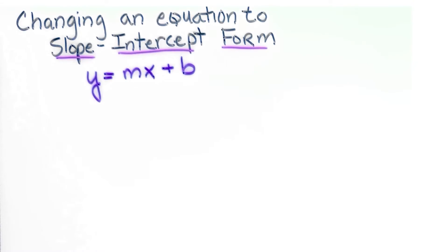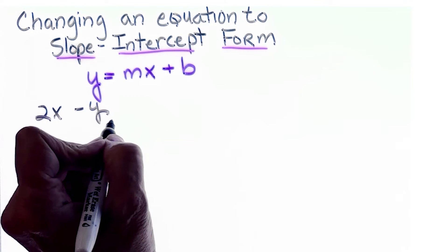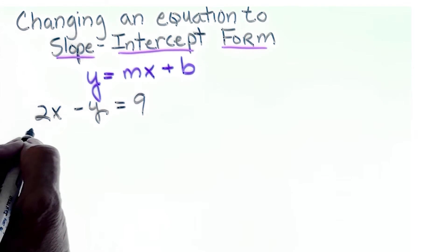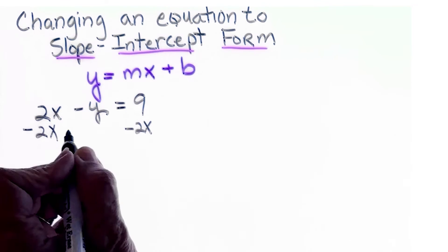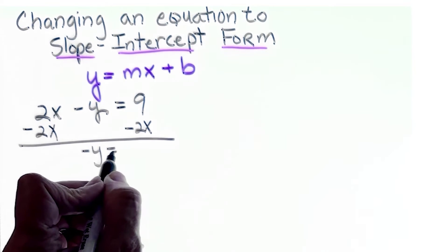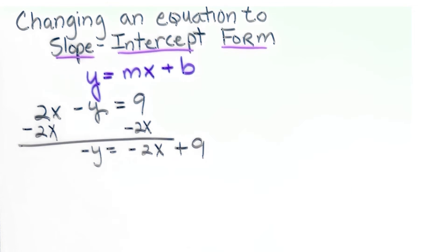This lesson is about changing an equation to slope-intercept form, y equals mx plus b, when given an equation in standard form such as 2x minus y equals 9. I subtract 2x from both sides of the equation, so that minus y becomes negative y equals negative 2x plus 9.